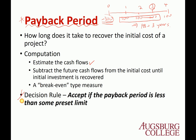For the decision rule, you accept the project if the payback period is less than some pre-set limit — shorter is generally better. You have to set a pre-set limit yourself. If you think three years is too long and want a two-year payback, you reject. If you believe three years is short enough and your pre-set limit is four years, then you accept. One problem is that this pre-set limit is not scientifically determined — it's basically an arbitrary decision.